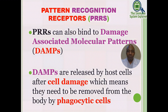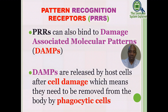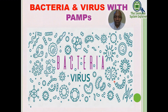PRRs can also bind damage-associated molecular patterns — DAMPs. DAMPs are released by host cells after cell damage and need to be removed from the body by phagocytic cells. Here we have a picture illustrating PAMPs on bacteria and viruses. They are called patterns because they are conserved across many types of microorganisms — bacteria, viruses, fungi, protozoa, helminths, and so forth.